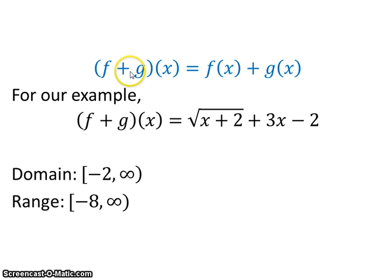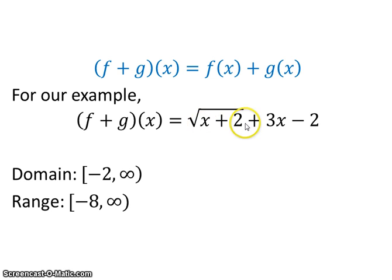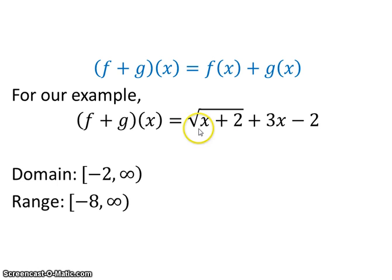Let's start with addition. f plus g of x equals f of x plus g of x, so we simply add our two functions. Finding the domain is fairly straightforward: look for square roots and make sure the value inside is zero or positive, otherwise exclude those values. Also, if you have a fraction with a variable in the denominator, look for values that make the denominator zero and exclude those from the domain as well.